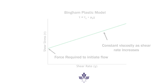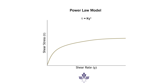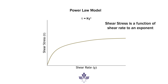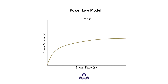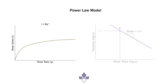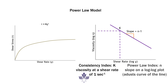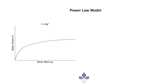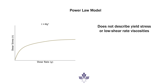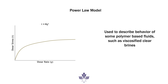The power law model attempts to address the shortcomings of the Bingham plastic model, as it does not assume a linear relationship between shear stress and shear rate. The model depicts a fluid where the shear stress increases as a function of the shear rate raised to a certain power. Similar to Newtonian fluids, the plots of shear stress versus shear rate for power law fluids go through the origin. It factors in a consistency index termed K and the power law index termed N. One shortfall of power law is that it does not fully describe a given drilling fluid's yield stress and low shear rate viscosities. The power law model can be used to more accurately describe some polymer-based drilling fluids that do not exhibit yield stress, which can include some fluids viscosified with biopolymers — i.e., viscosified clear brines.